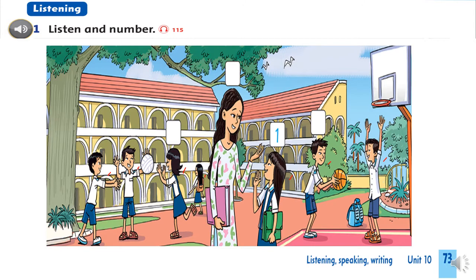OK everyone, what can you hear? This friend has long black straight hair. What's her name? Her name's V. So V is number 1. Number 1 is an example for you. And now you go on listening and write the number.